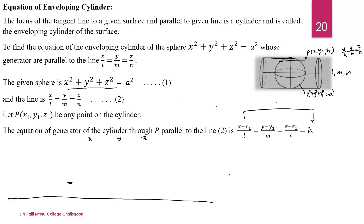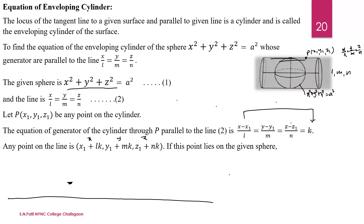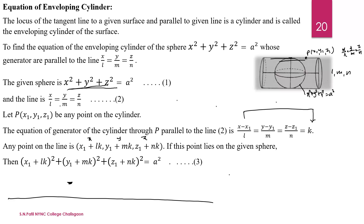Now let us find the general point. Consider the first and last terms: l is multiplied and −x₁ is added. Similarly, we find y and z to get the general point. If this point lies on the given sphere, then this general point satisfies the equation of the sphere. We substitute this point into equation 1, and equation 1 becomes (x₁ + lk)² + (y₁ + mk)² + (z₁ + nk)² = a².